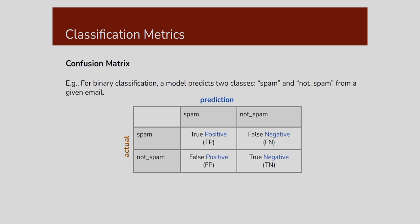For a binary classification corresponding to an email, I have two classes — one is spam, another one is not spam. In this confusion matrix, we are showing the actual classes spam and not spam, and also the prediction. The first cell is the true positive — how many times spam is recognized as spam. And what is the false negative? How many times spam is recognized as not spam — that is the false negative.